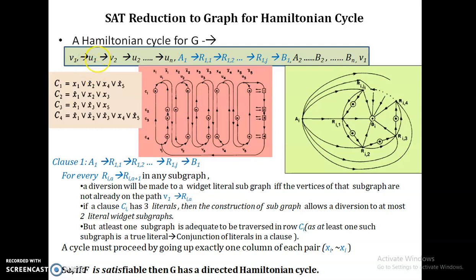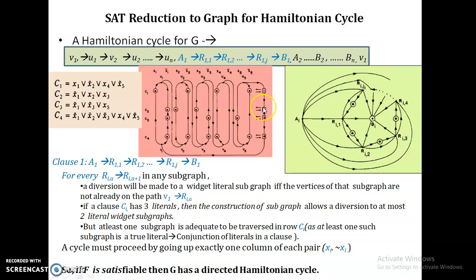To check whether this graph has a Hamiltonian cycle, we start from vertex v1. After completing all variable columns, u5 is connected to a1 and br is connected back to v1. For the Hamiltonian cycle: start at v1, visit u1, then v2, then u2, then v3, u3, v4, u4, v5, u5, then reach a1. From a1 visit all literals in clause c1, then return, continue through subsequent clauses, and once it reaches vr it comes back to v1.